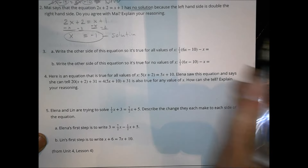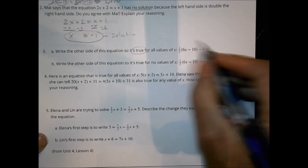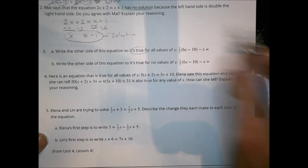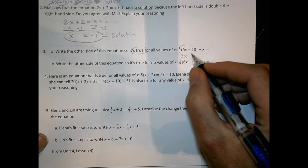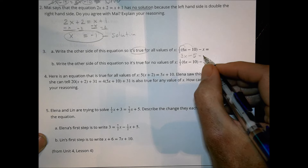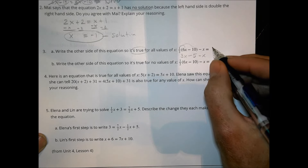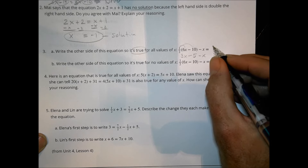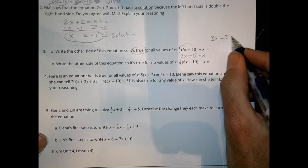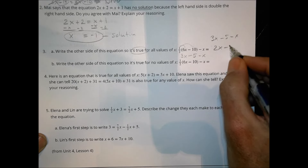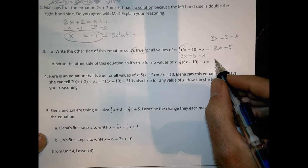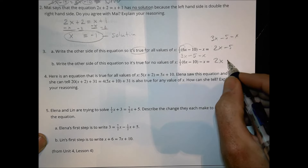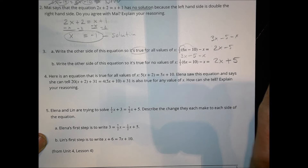Number 3: write the other side so that it's true for all values. Take a look at what we have — you might want to distribute first. One half times 6x is 3x, and one half times negative 10 is negative 5, and then we have a minus x. This can be rewritten as 3x minus 5 minus x, or grouped as 2x minus 5. That would work out just fine. If I want to say no values of x would work, I could keep the 2x the same, but change minus 5 to plus 5 — now plus 5 being equal to minus 5 is just not going to work out.